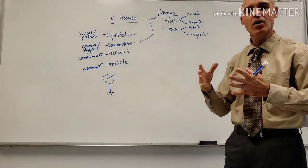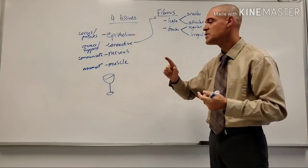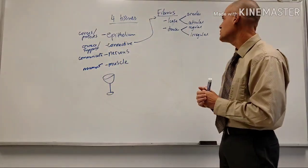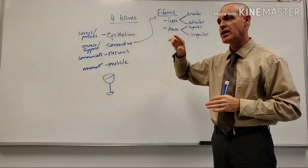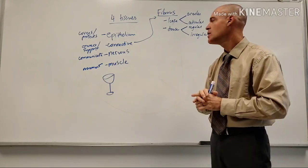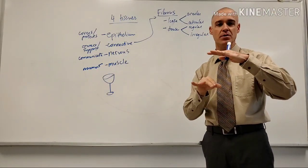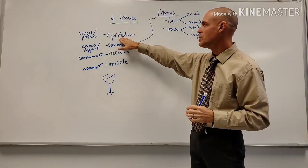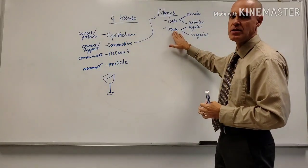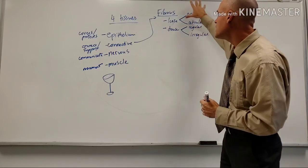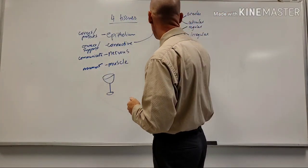Your tendons and ligaments fall under dense regular connective tissue - a very ordered arrangement. Dense irregular is the connective tissue found under the epidermis. The epidermis is stratified squamous epithelium, and under that is what we call the dermis, which is specifically dense irregular connective tissue. What's unique about all fibrous connective tissue is it has visible collagen fibers in it.